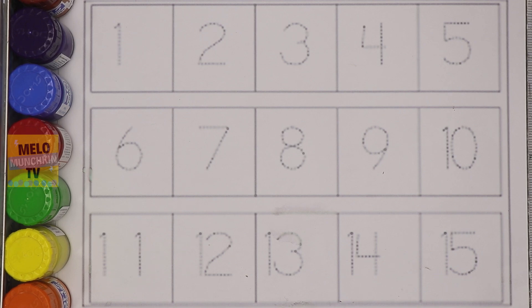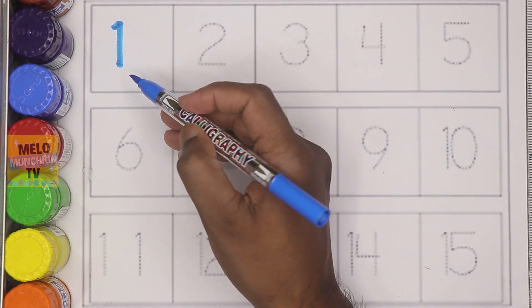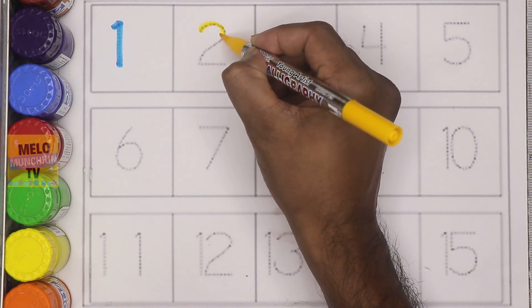First I'll take blue color and write the number one. This is number one: O-N-E, one. Next I'll take yellow color and write the number two. This is number two: T-W-O, two.